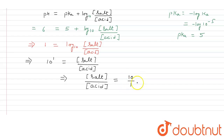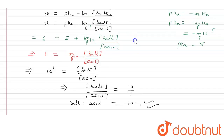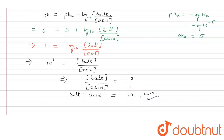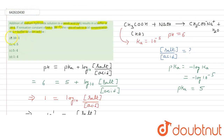So the ratio of salt to acid is 10:1. Checking the options — 10:1, 4:5, 5:4, and 1:4 — we are getting 10:1, so the correct answer is option A, that is 10 ratio 1. Options B, C and D are wrong answers. The ratio of salt to acid is 10:1. Hope this answered your question, thank you.